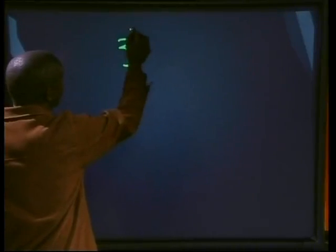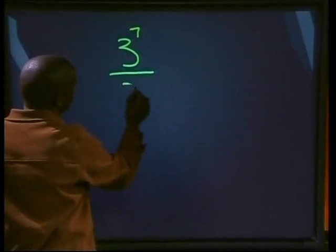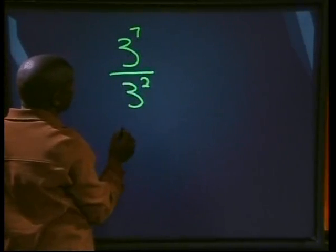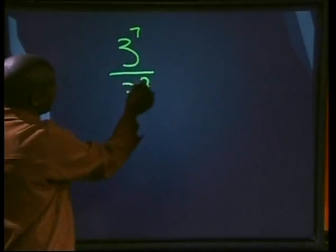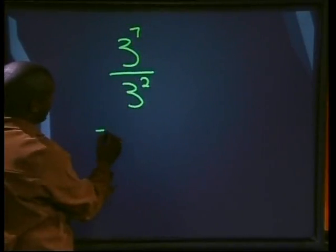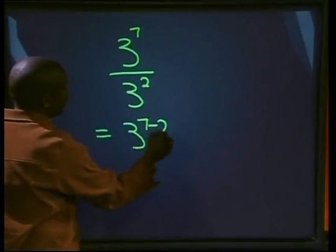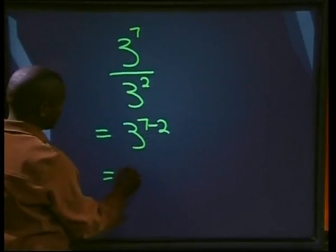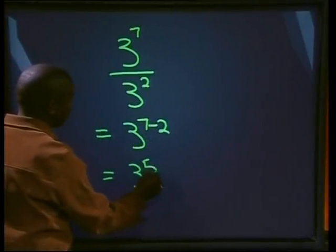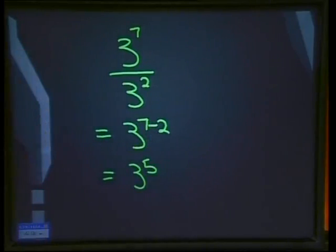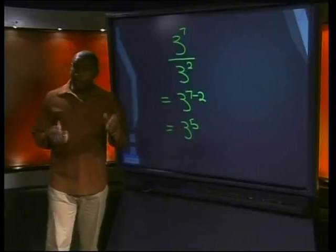You should remember the law of division of powers. When we divide powers of the same base, let's say we have three to the power seven divided by three to the power two, we subtract the exponents. So in this case we'll have three to the power seven minus two, which will give us three to the power five.